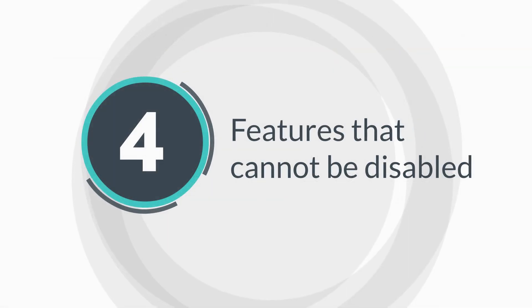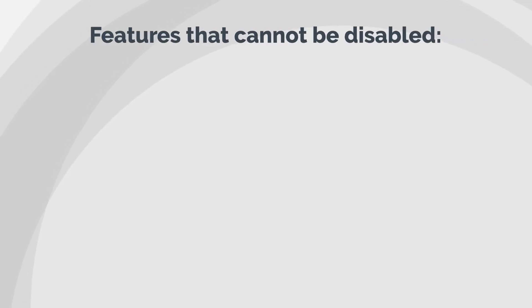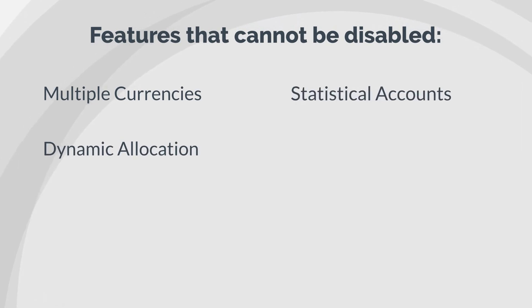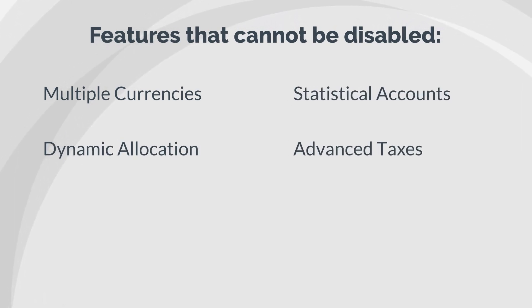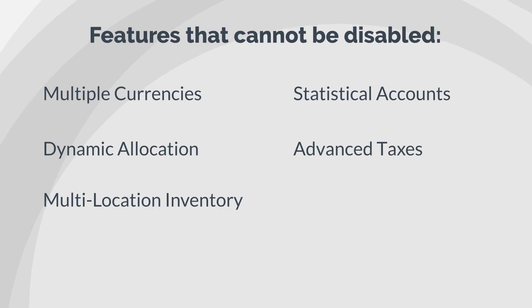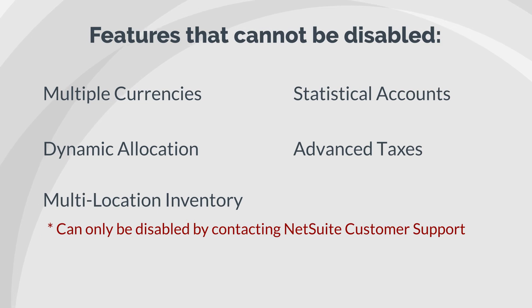Finally, there are features that simply cannot be disabled once you have used them. The main features that fall under this category include Multiple Currencies, Dynamic Allocation, Statistical Accounts, and Advanced Taxes. Another of these features is Multi-Location Inventory, although this feature is unique in that it could actually be disabled, just not by the NetSuite administrator at your company. The only way to disable this feature is by contacting NetSuite customer support.